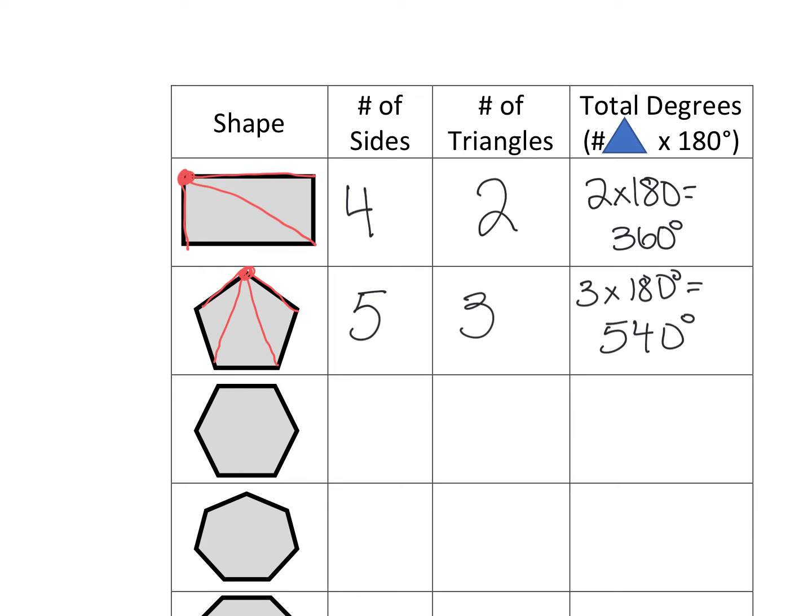All right, I'm ready to try this out. So here is my vertex. I'm going to go to each other vertices. See, my hexagon, which has six sides, ends up with four triangles. So it becomes four times 180 degrees for a total of 720 degrees.